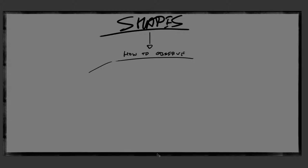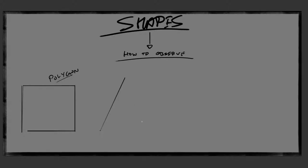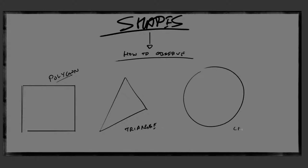There are only three types of shapes. One is a polygon, which basically has four sides. Then comes a triangle — basically three sides. So: four sides, three sides, and a circle, which has no sides. These are basically the shapes that you need.